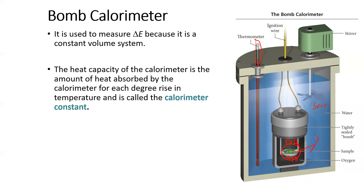The heat capacity of the calorimeter is the amount of heat absorbed by the calorimeter for every degree, and that is constant. We can calibrate this and determine what it is — it's called the heat capacity, with units of kilojoules per degree Celsius. The heat of the calorimeter is the heat capacity C times delta T, which is Q equals CΔT. We don't use specific heat here because we're using the calorimeter's heat capacity. Specific heat typically incorporates mass and uses mcΔT, but for the calorimeter it's just Q equals CΔT.